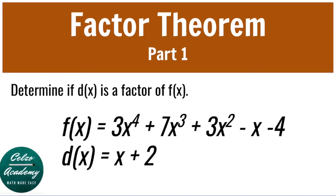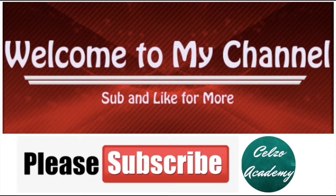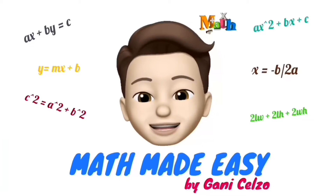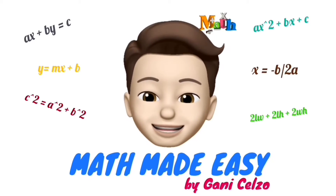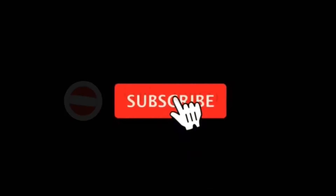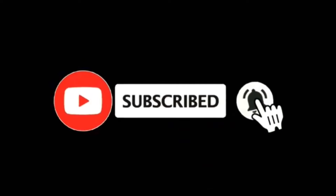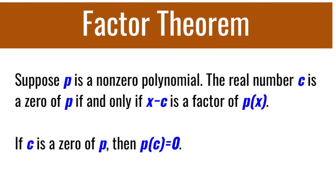Today we're learning the Factor Theorem. Suppose p is a non-zero polynomial. The real number c is a zero of p if and only if x minus c is a factor of p of x. This means that if c is a zero of p, then p of c is equal to zero.